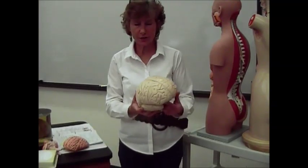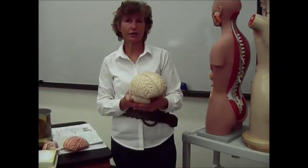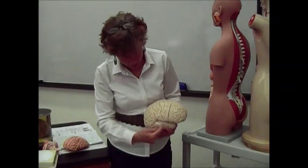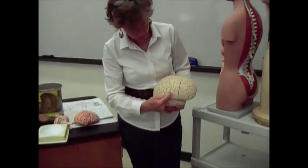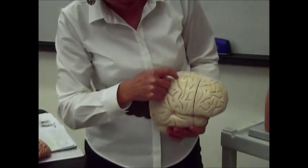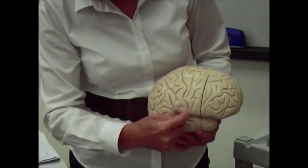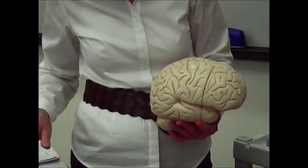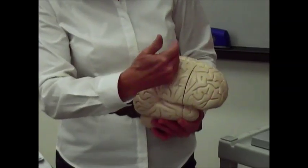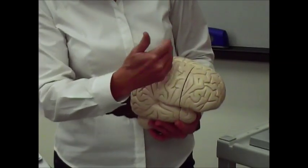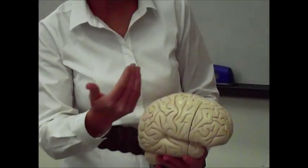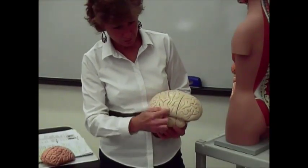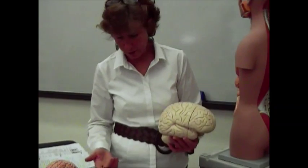You also have a fissure known as the central sulcus or central fissure. A lot of models don't show it very well, but this one does. The main thing to know is that it separates a sensory area from a motor area. You may learn more about that in lecture, but don't worry too much about identifying that central sulcus on your models.